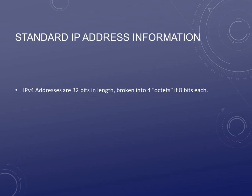First off, we're going to deal with just IPv4. IPv4 addresses — your IP addresses — are 32 bits long. They're broken into four groups that we call octets. Each octet is 8 bits in length. You're going to understand that completely by the second video when we start breaking this down into binary. So it's 8 bits dot 8 bits dot 8 bits dot 8 bits, which equals 32 bits.